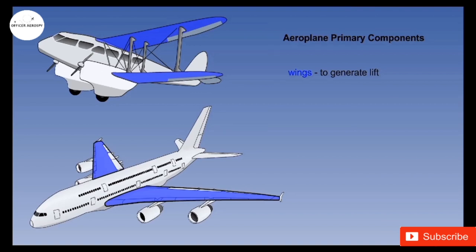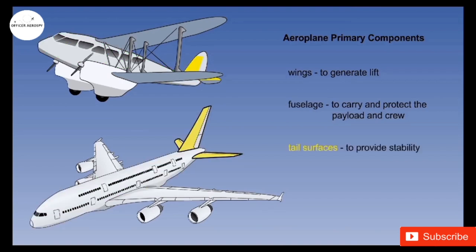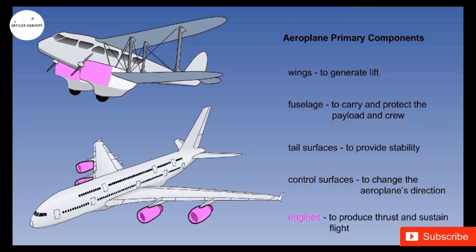Second is the most important thing, which is called the fuselage. The fuselage is to carry the payload or crew very safely. The third one is tail surfaces to provide required stability and ensure the airplane flies safely. Fourth is the control surfaces to change the direction of the plane and if required to position it in air. Fifth is the engines to produce the thrust and help to move in the forward direction.